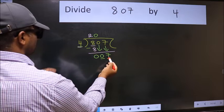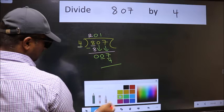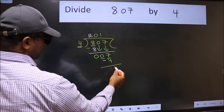Now 7. A number close to 7 in the 4 table is 4 times 1 is 4. Now we should subtract. We get 3.